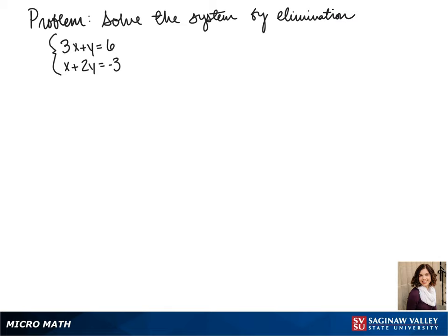Welcome to another day of algebra. Today we'll be solving the system by elimination. Our first equation is 3x plus y equals 6, and our second equation is x plus 2y equals negative 3.